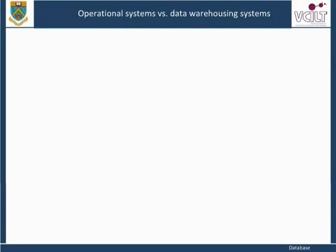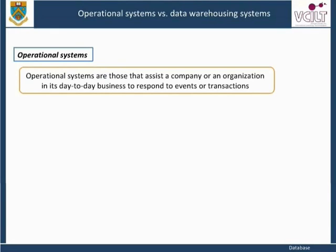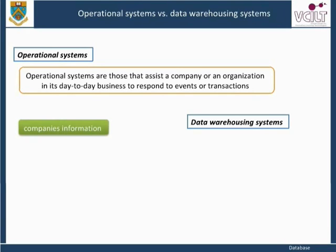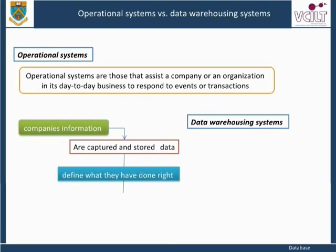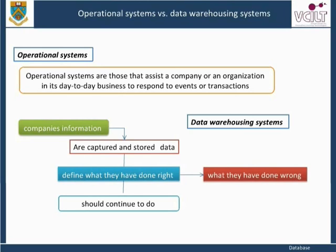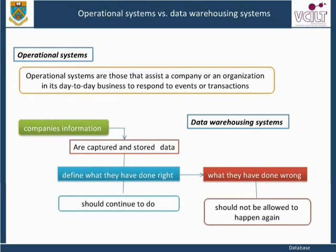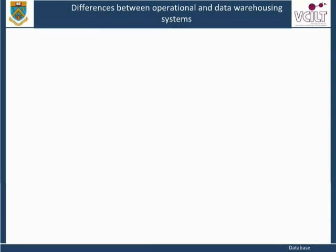Operational Systems are those that assist a company or organization in its day-to-day business to respond to events or transactions. Data warehouses are where companies' information is captured and stored to define what they have done right and should continue to do, as well as what they have done wrong and should not be allowed to happen again. There are key differences between operational and data warehousing systems.